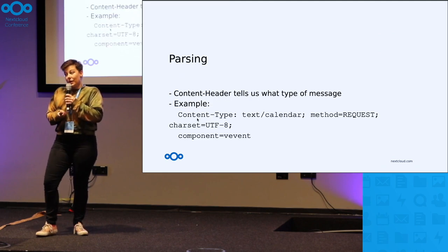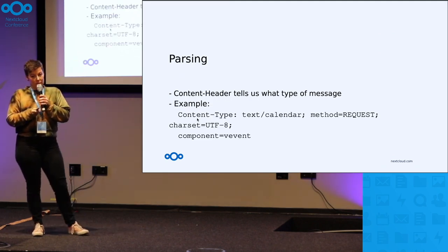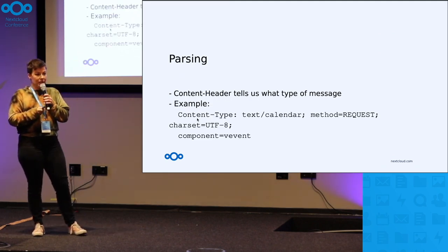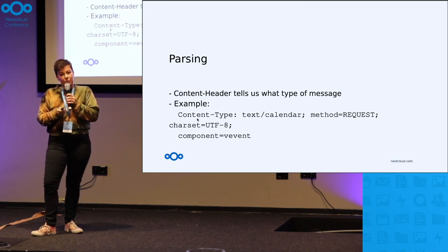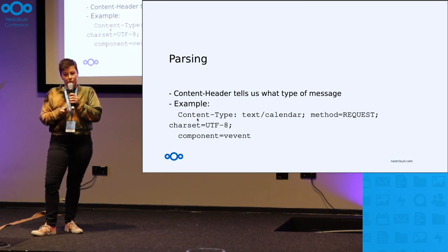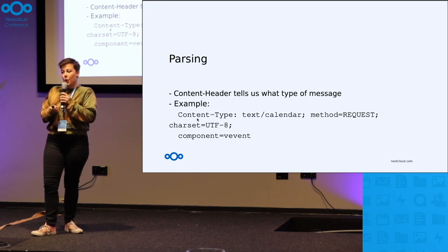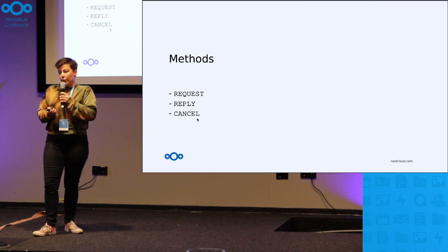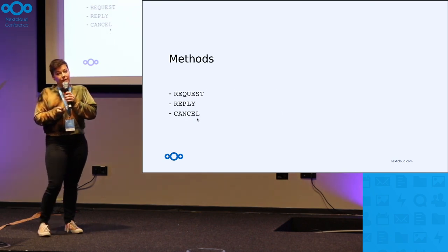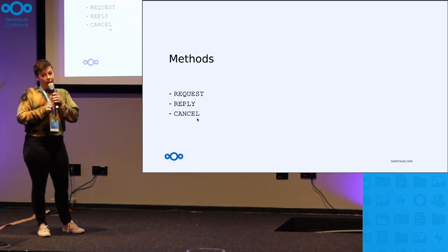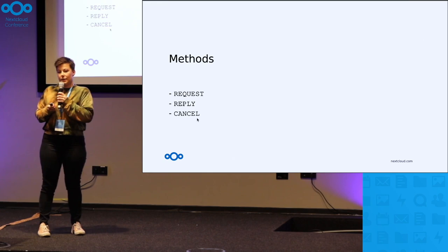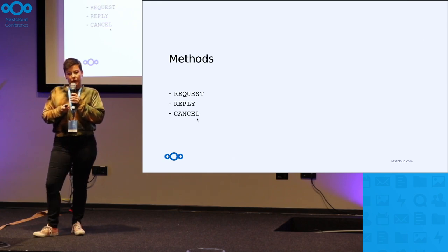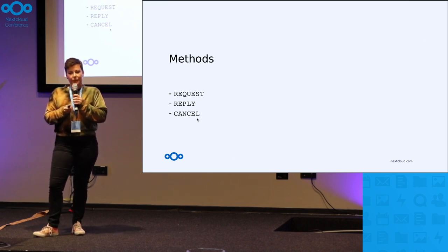The parsing happens in the mail. You receive an email and the content header will tell you what type of message it is. It can be one of three: a request, a reply, or a cancel. A request and a cancel are sent from an organizer, and the reply is sent from an attendee.